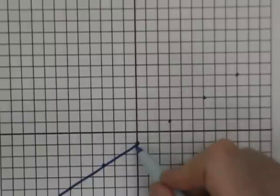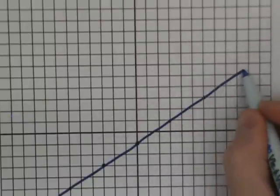Kick it in reverse. I can go down 2, left 3, down 2, left 3, down 2, left 3. I want to connect the points. As I connect all those points, it produces this nice line for me.